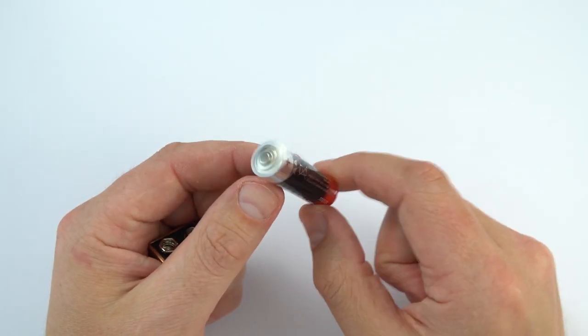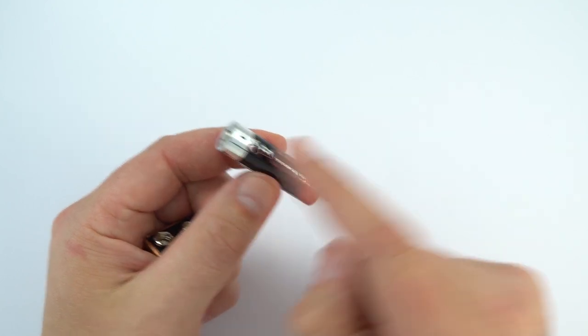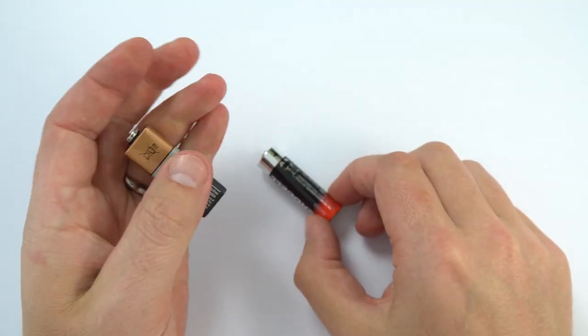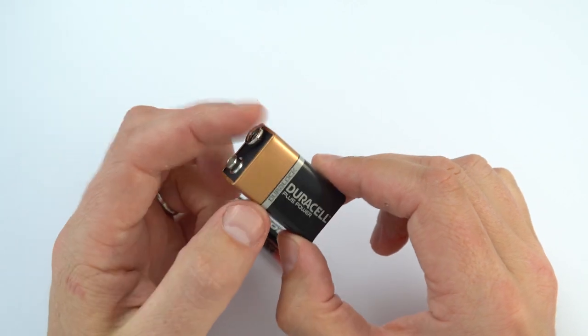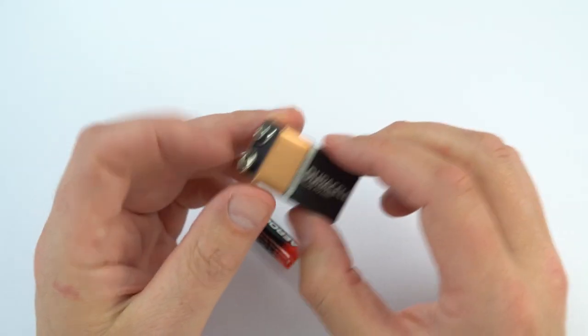Most of the time we're used to our AA batteries looking like this. We've got a positive end and a negative end. Sometimes we have these batteries here where you've got the positive and negative both at the same end.